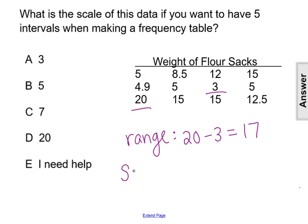For the scale, we take that range and divide by how many intervals we want. So we divide 17 by the five intervals we want, and that gives us 3.4.